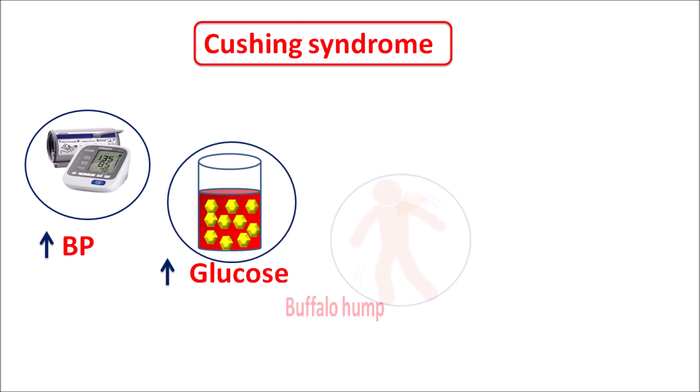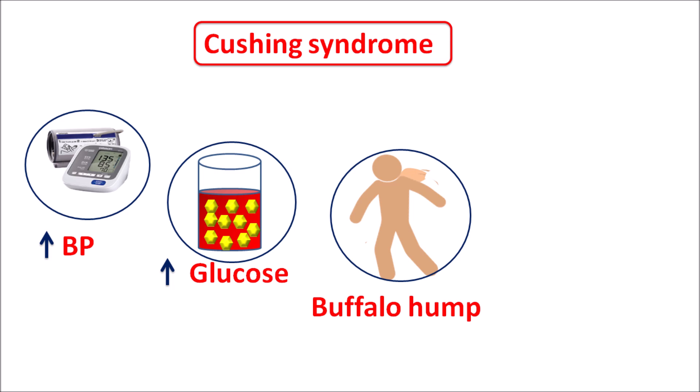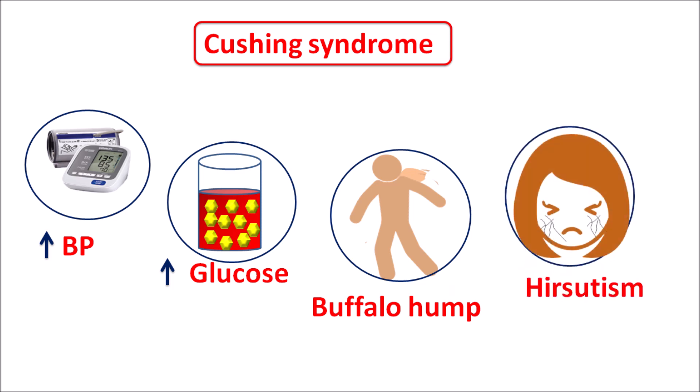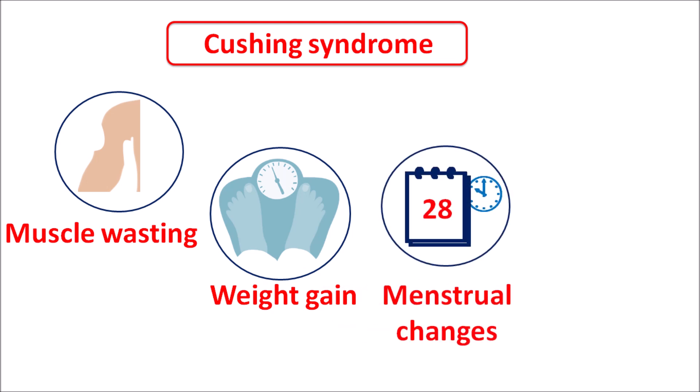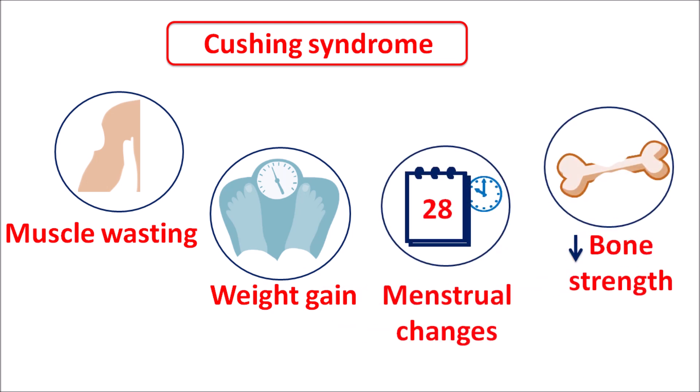Similarly, increased obesity and fat deposition — particularly on the back — can result in a buffalo hump. It can also produce rounding of the face, known as moon face, due to fat deposition. Hirsutism, or unwanted hair growth particularly on the face, can also be observed. Muscle wasting, weight gain, menstrual changes in women, and reduced bone strength resulting in easy bruising of bones and skin are also symptoms collectively called Cushing syndrome.